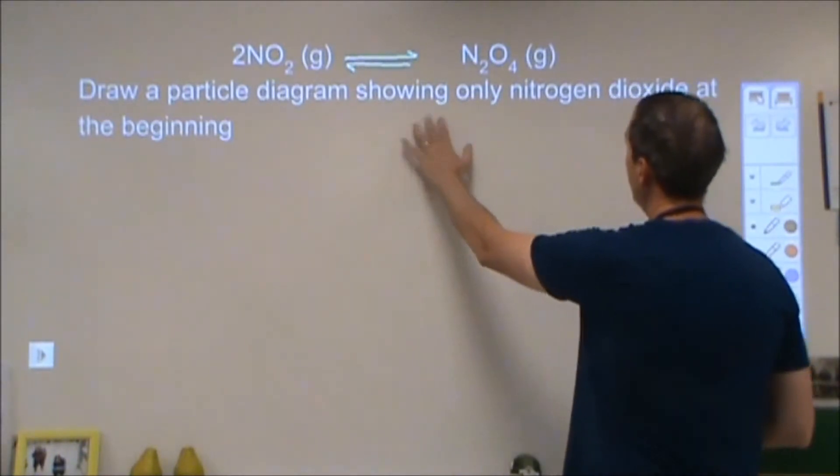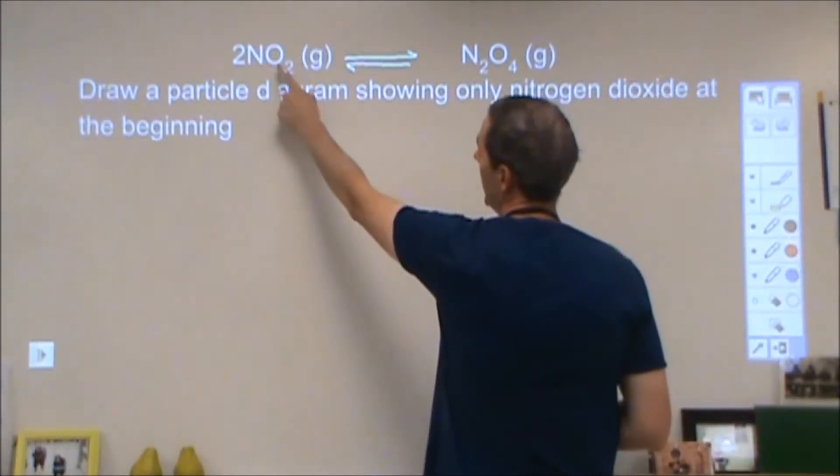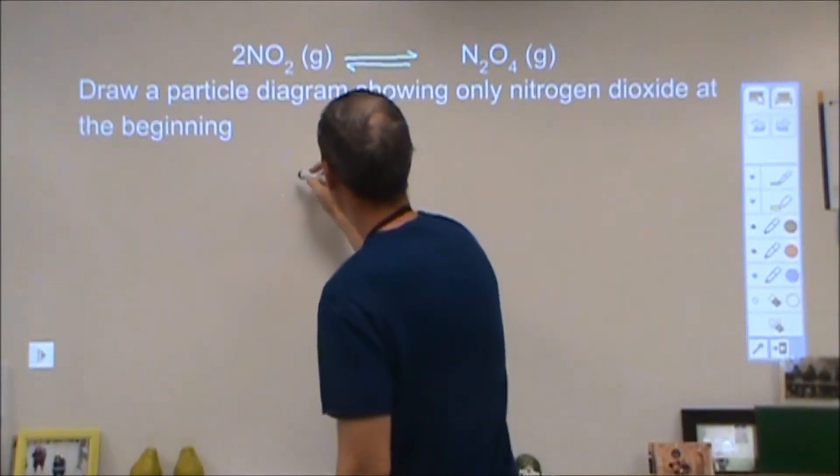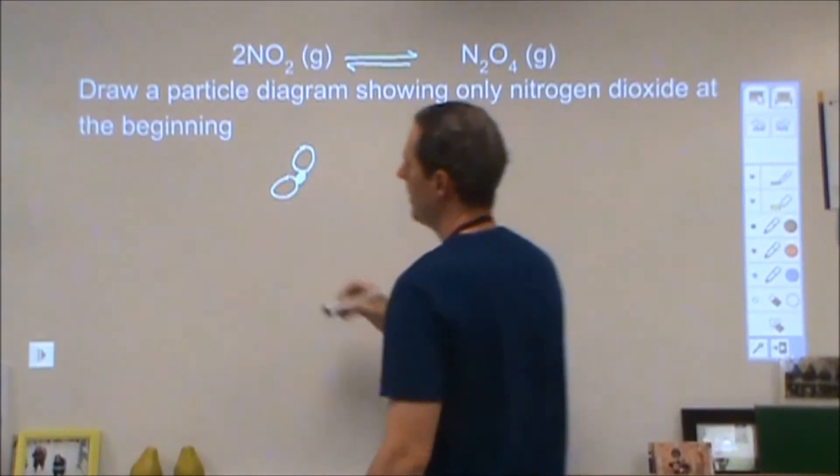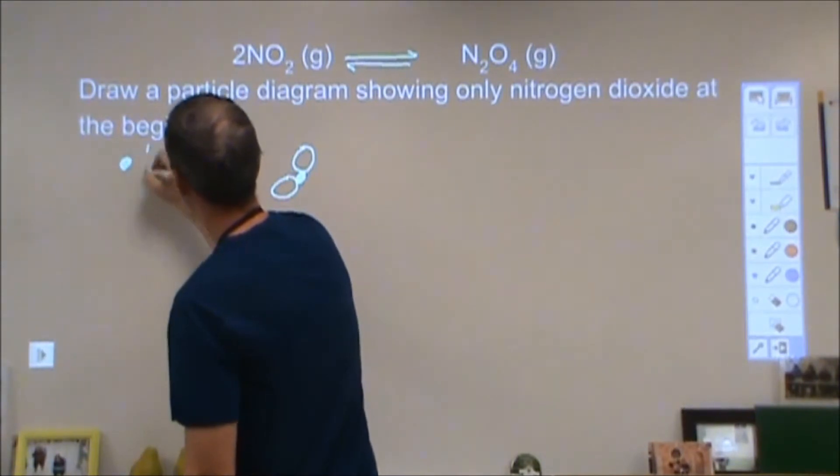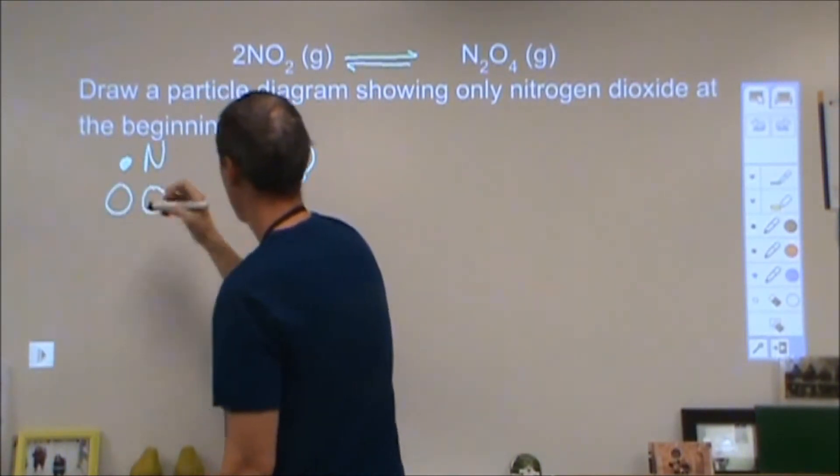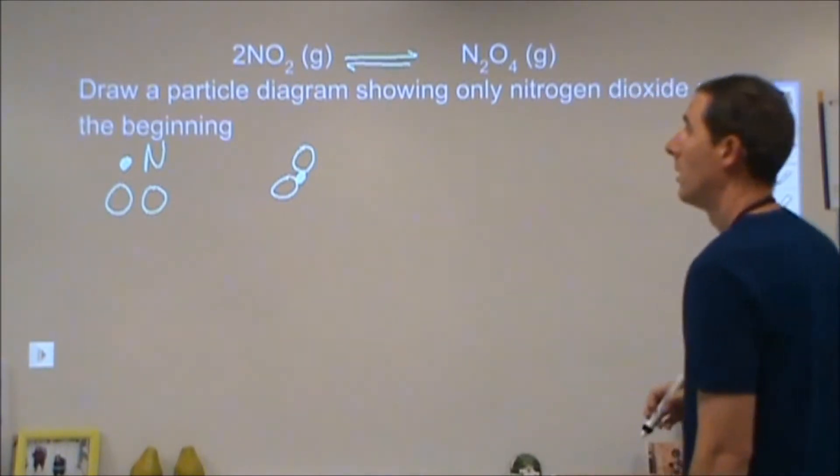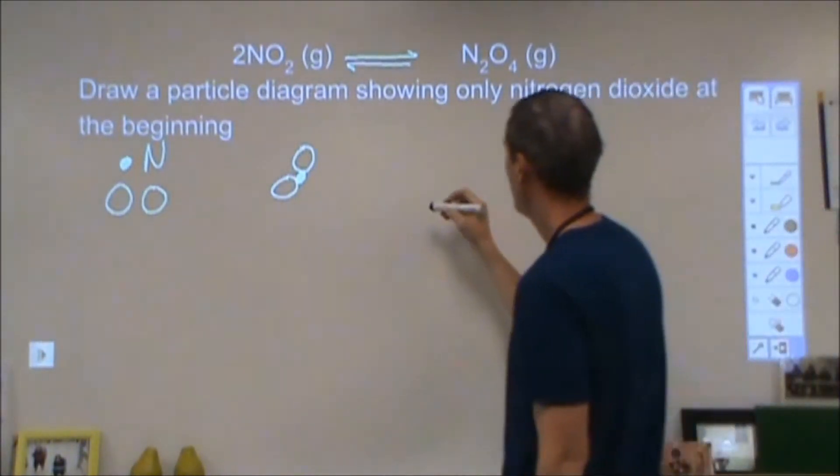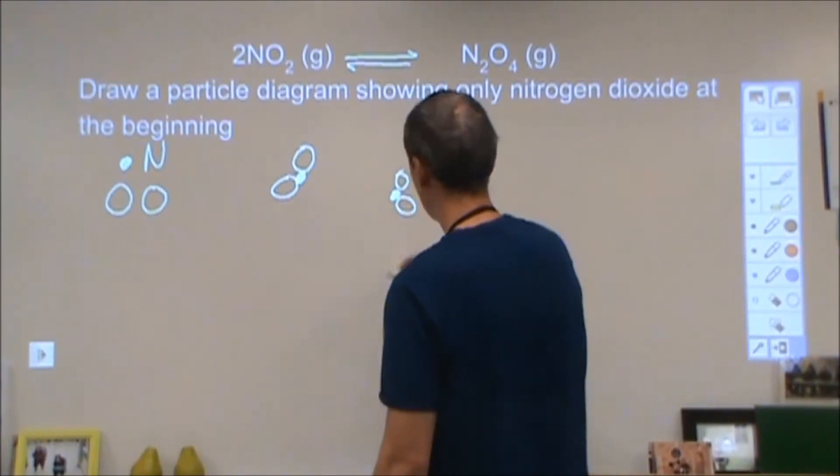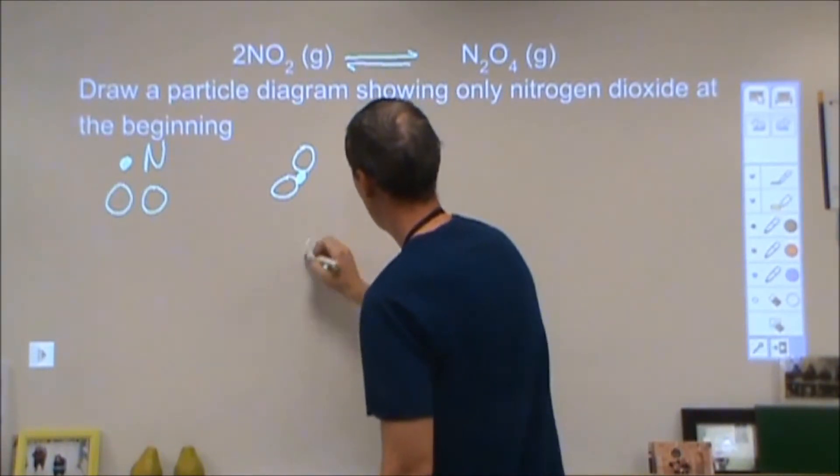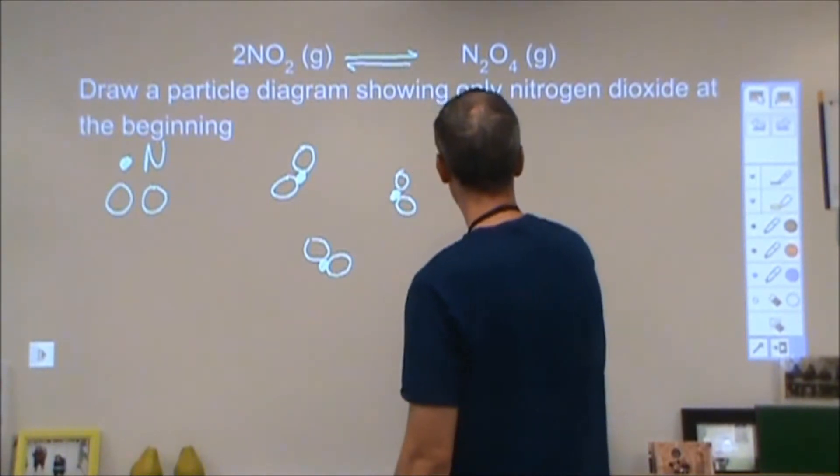Starting off, we're showing a particle diagram showing only nitrogen dioxide at the beginning, so we're starting with all reactant. For NO2, I'm going to draw it like this where the nitrogen is here and the oxygen is that. I'm going to start with a certain number of these NO2s to set up a consistency amongst all of my drawings throughout the problem.